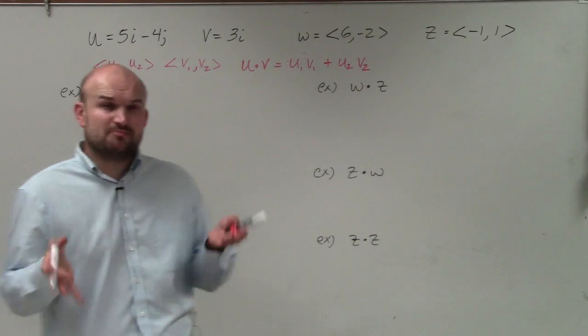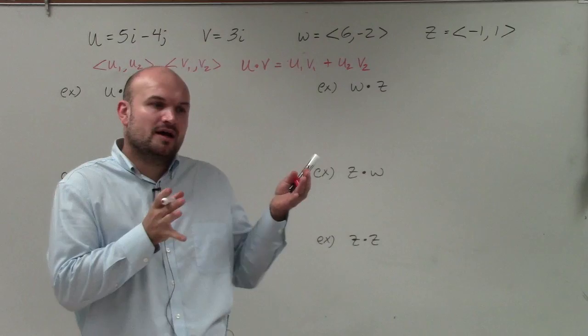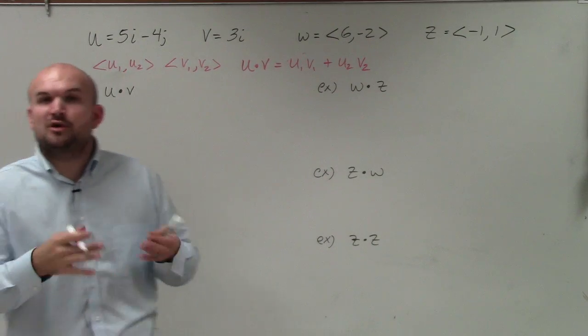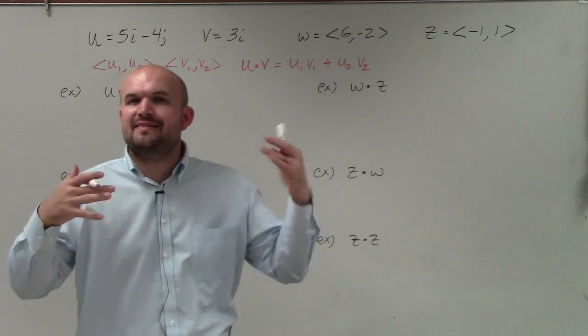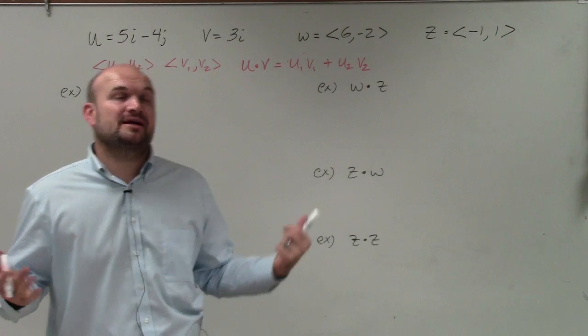So basically what we're doing is multiplying the first two components of our two vectors and then multiplying the second two components of our vectors and then finding the sum. And that's going to be our dot product.